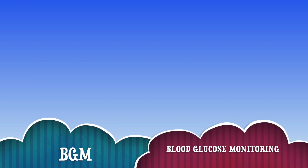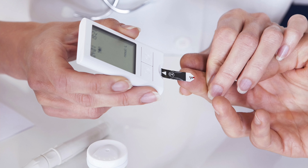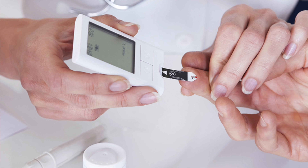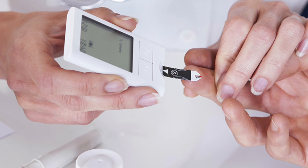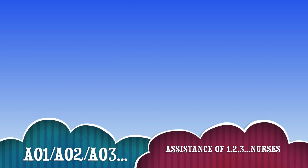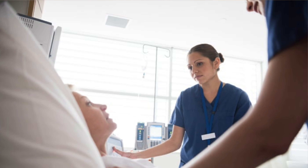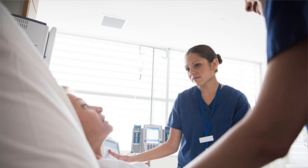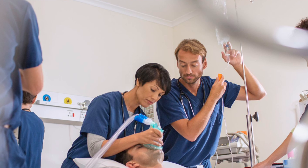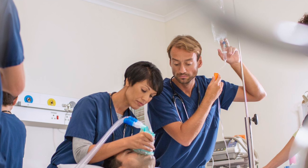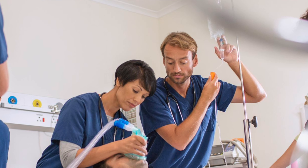BGM means Blood Glucose Monitoring. In hospitals it's often called BMs, but when you see BGM, know it refers to blood glucose monitoring. Then there's A01 — this could be A01, A02, A03, with the number indicating the level of assistance needed. A01 means the patient needs assistance from one nurse, A02 from two nurses, and so on.